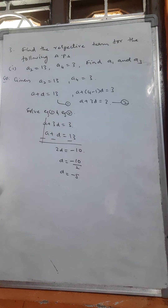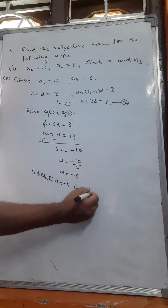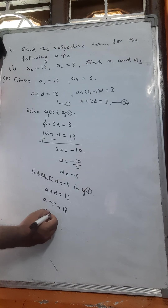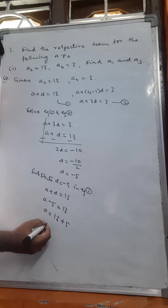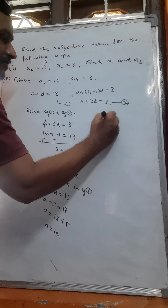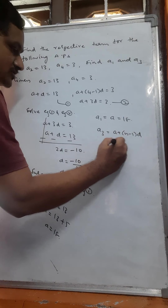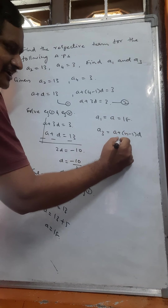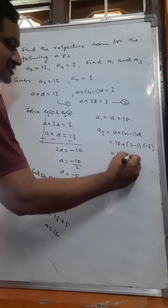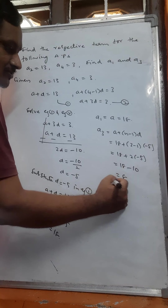Substitute d is equal to minus 5 in equation number 1: a plus d is equal to 13, so a minus 5 is equal to 13, a is equal to 18. So a is equal to 18 and d is equal to minus 5. Now find a3: a plus 3 minus 1 into d is 18 plus 2 into minus 5, which is 18 minus 10, equal to 8.